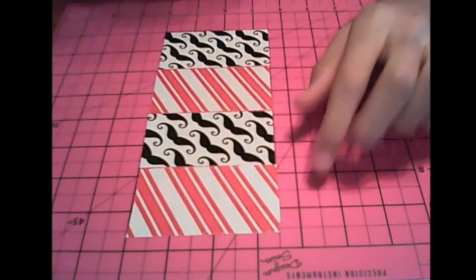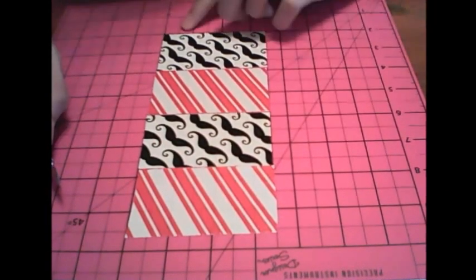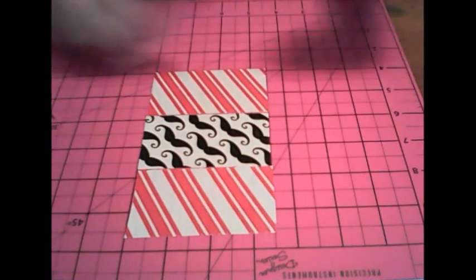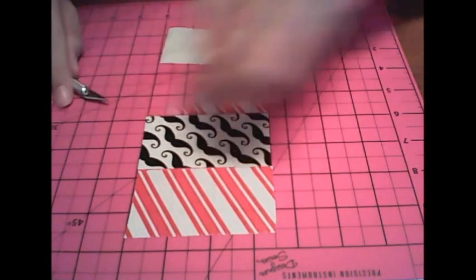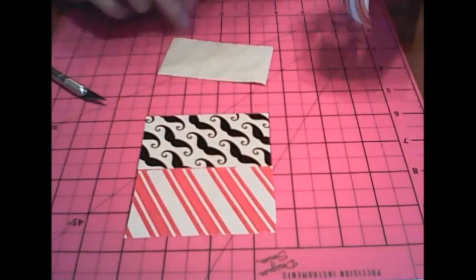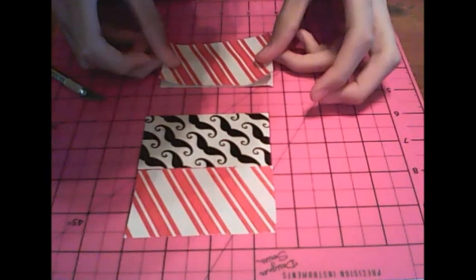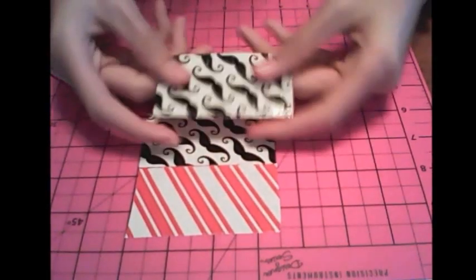Your first step to making a duct tape drink coaster is to cut out four strips of tape that are three and a half inches long. Now you're going to take your first two strips and stick them together, just like this, as carefully as possible so there's no more sticky side.